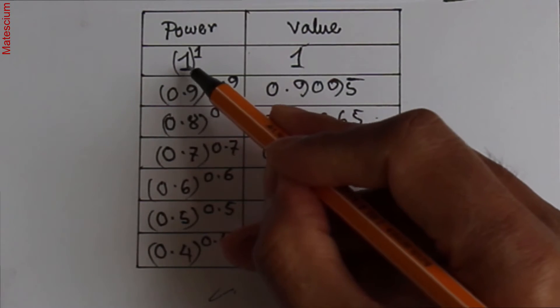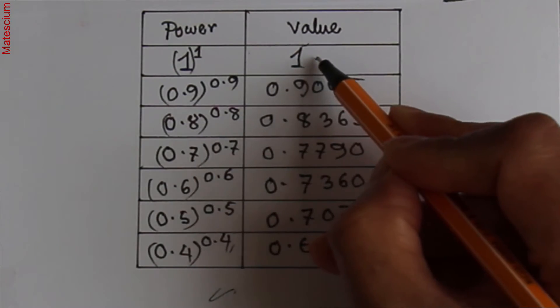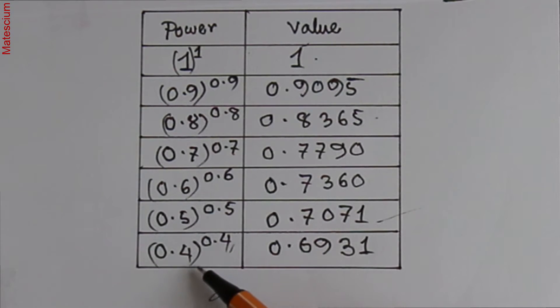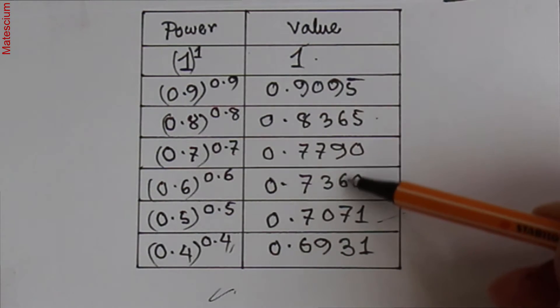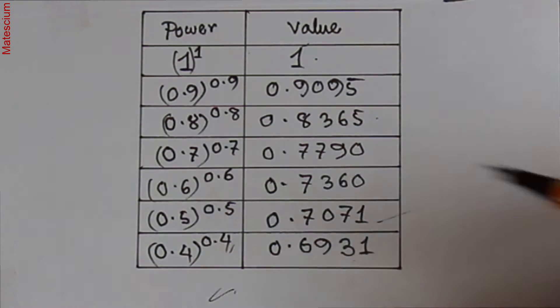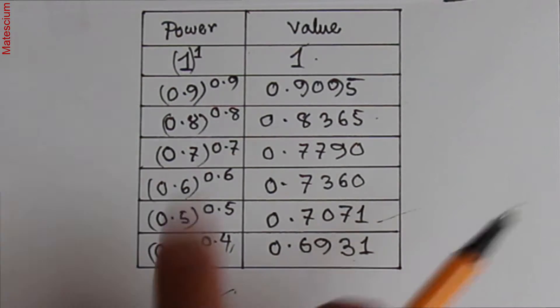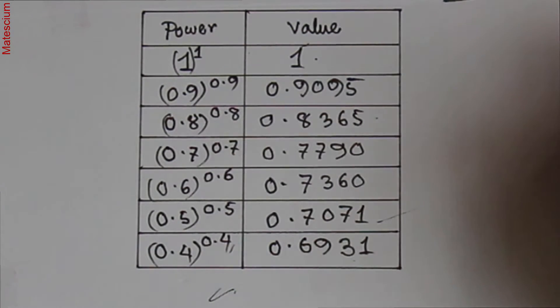Look at here. I started 1 to the power 1 equals 1, and then I reduced the value to 0.4 to the power 0.4. And then this value is gradually reduced until here. So if I reduce this power again one more further step, what will happen?